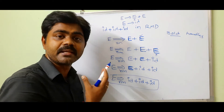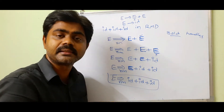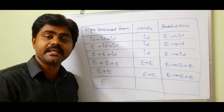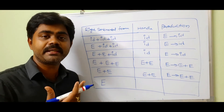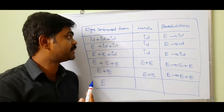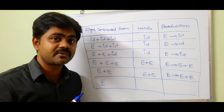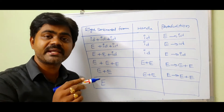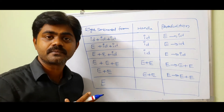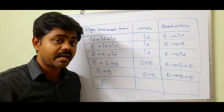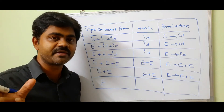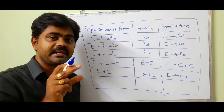Now we'll see this in a tabular format to explain the handles clearly. The table has three columns: the right sentential form, the handle, and the production. Since this is bottom-up parsing, we start with the given string and finally reach our root — we start with the leaf nodes and work up to the root node. So we start with ID plus ID plus ID.